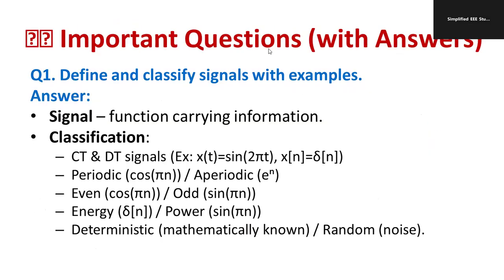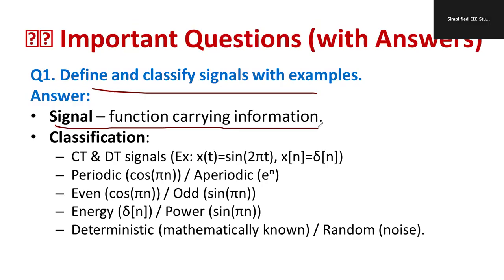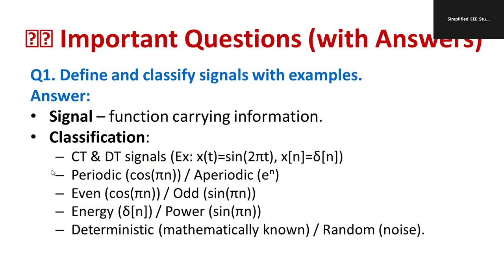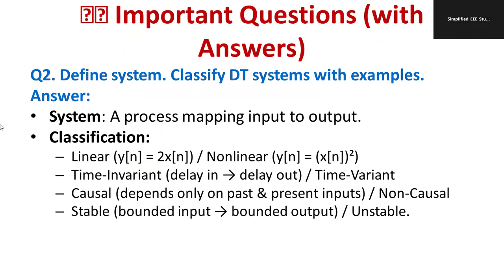Important exam question: Define and classify signals with examples. A signal is a function that carries information. Classification: continuous time signal x(t) = sin(2πt), discrete time signal x(n) = δ(n). Periodic signal: cos(πn); aperiodic signal: e^n. Even signal: cos(πn); odd signal: sin(πn). Energy signal: δ(n); power signal: sin(πn). Deterministic signal is mathematically defined; a random signal is essentially noise.